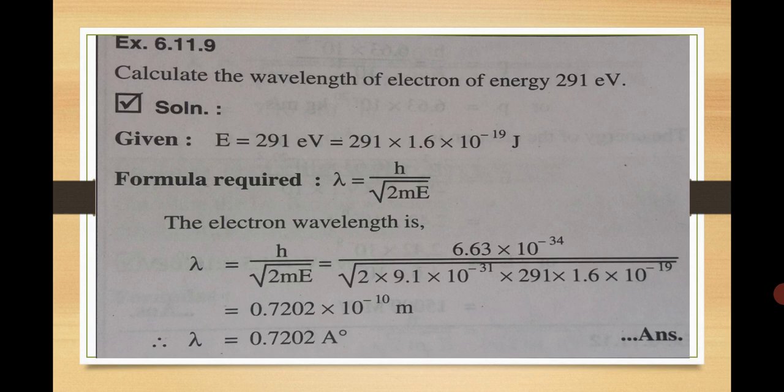If we observe this, an electron having energy 291 electron volts has a matter wave wavelength of 0.720 angstrom, or 0.720 × 10⁻¹⁰ meters. If we consider it as 7.202 × 10⁻⁹ meters, it is in nanometers. So when we are considering the electron, its matter wave is in the range of nanometers.